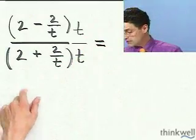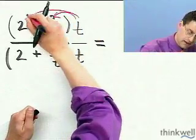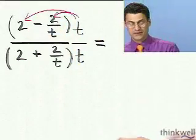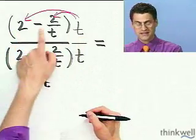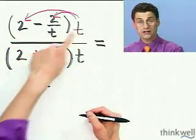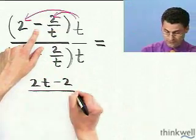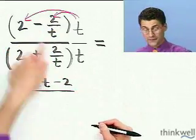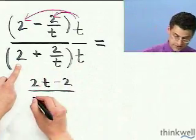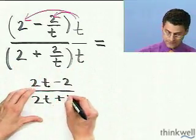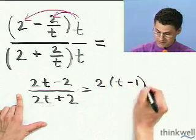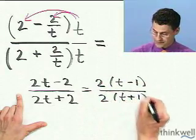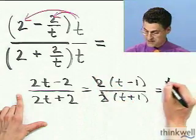I got to distribute, right? Don't make a mistake. Don't make a classic mistake. I got to distribute that t everywhere. When I distribute that t here, I see 2t. When I distribute that t here, I see a cancellation, so I'm just left with minus 2. On the bottom, when I distribute, I see a 2t, and then here I see a plus 2. I see the common factor of 2, as I saw before. 2 times t minus 1 divided by 2 times t plus 1. A little cancellation, and I'm left with the answer we got before, t minus 1 over t plus 1. Same answer.